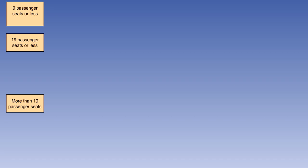The regulations split aeroplanes into three groups: those which have an approved passenger seating configuration of 9 or less, those with 19 or less but more than 9, and those with more than 19.